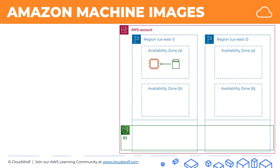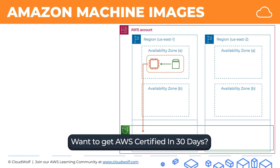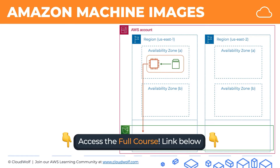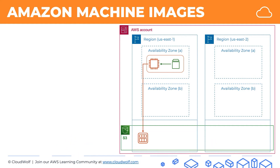Let's imagine that we have an EC2 instance running in one of our availability zones. We have an EBS volume attached to this instance, and that's where our operating system is sitting and any data that the instance is processing. What we can do is take this whole setup — this EC2 instance including the EBS volume, because that is where all the data and operating system are — and we can create an image of that, and that will be an AMI, an Amazon Machine Image.